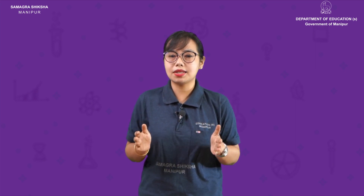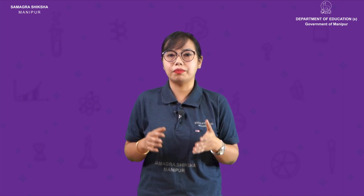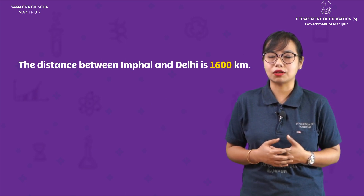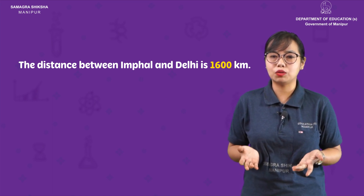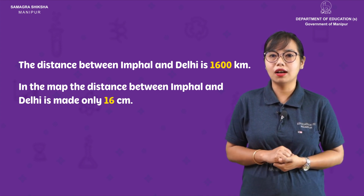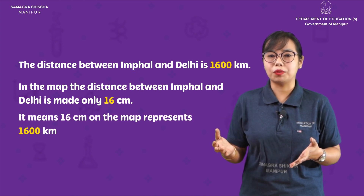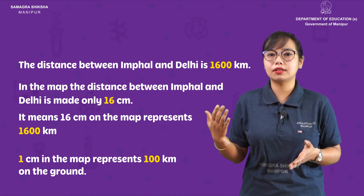Usually, a map has a scale. The map scale may be 1 cm or 1 m. For example, if the distance between two points is 16 centimetres on the map, the actual size could be 1,600 metres or 1.6 kilometres away.